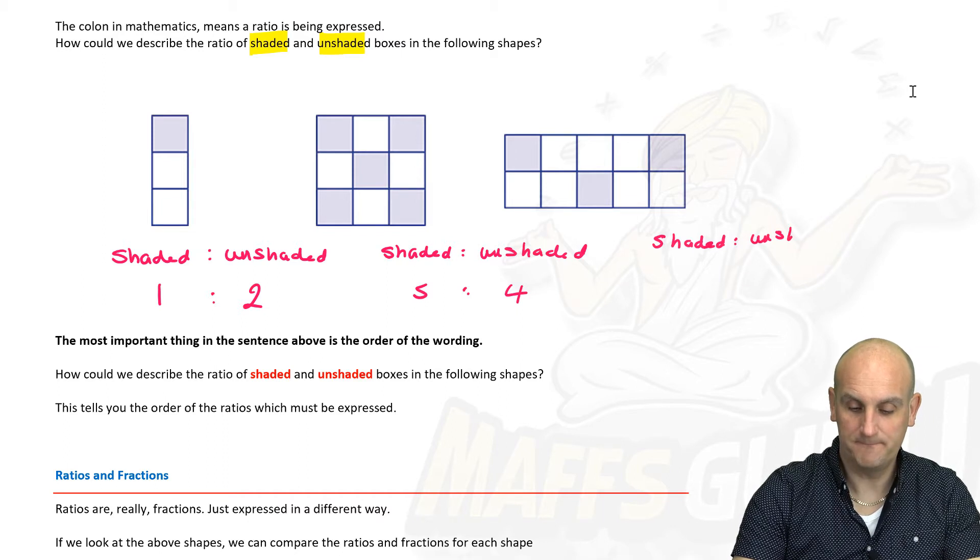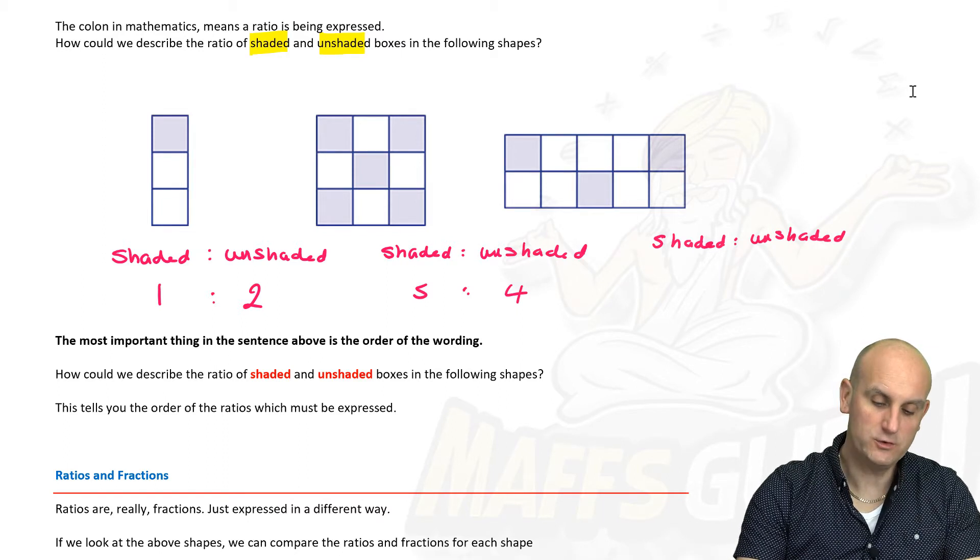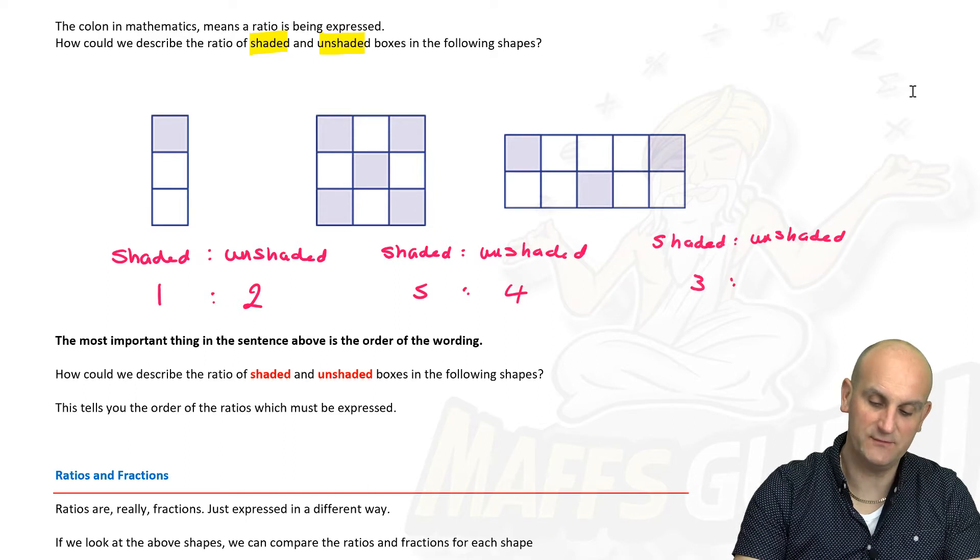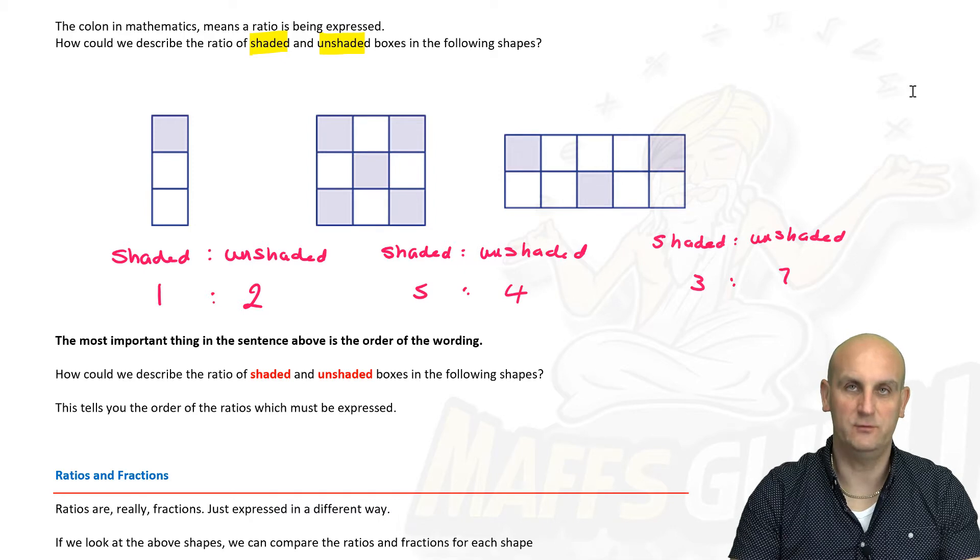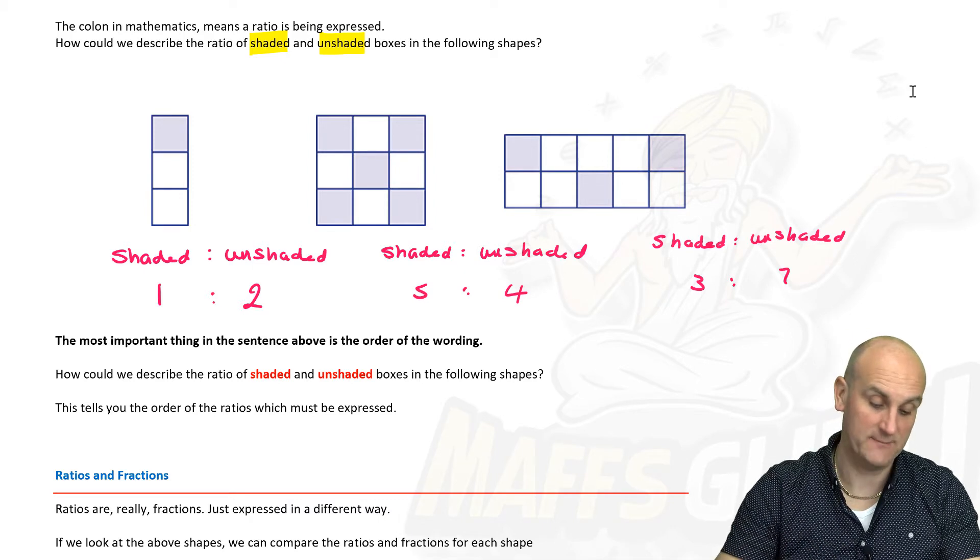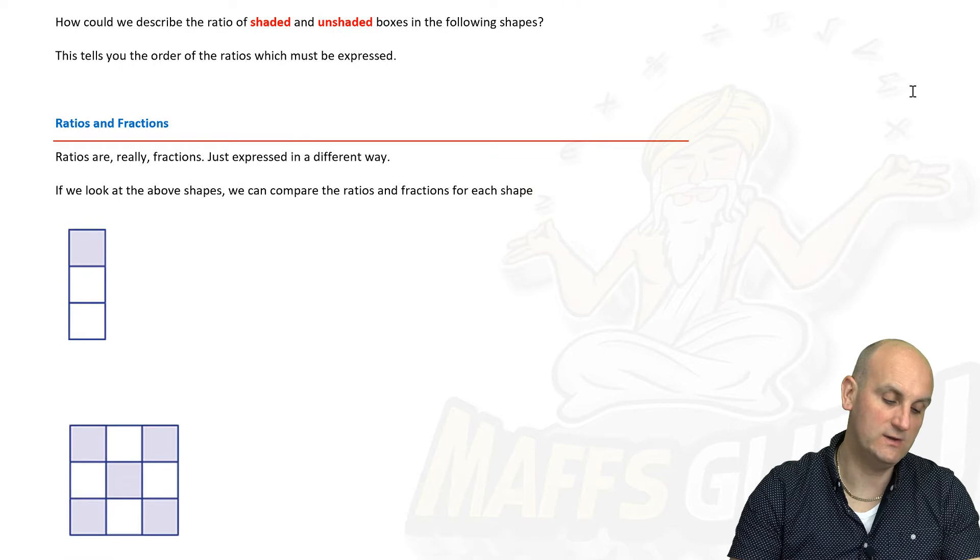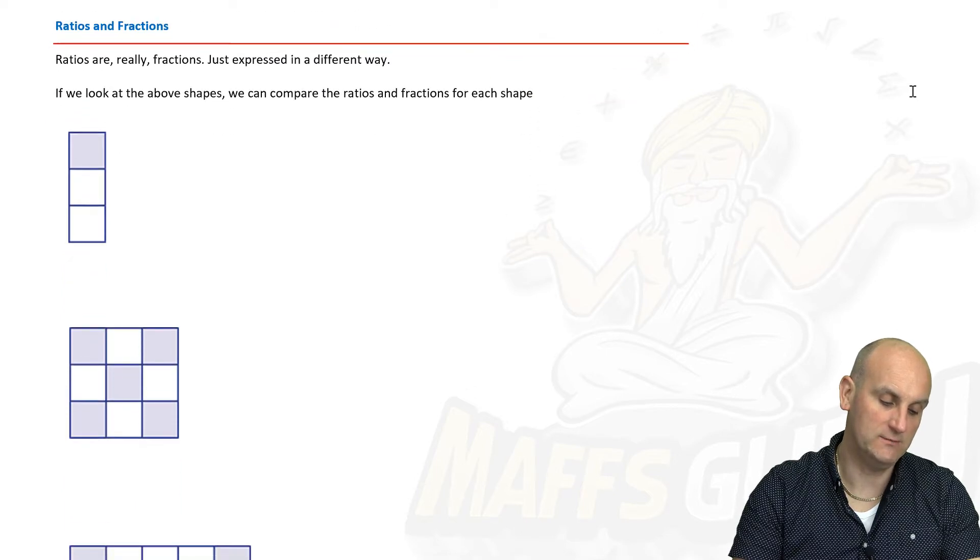What about this one here? Let's do shaded to unshaded: one, two, three shaded to one, two, three, four, five, six, seven unshaded. Now again you're going to say what on earth does this have to do with the price of fish? Nothing, actually. I'll come back to that in a moment. The important thing here is that the ratio is shaded to unshaded, right?